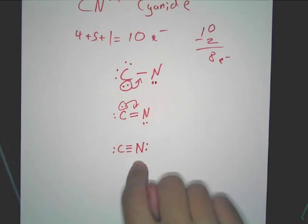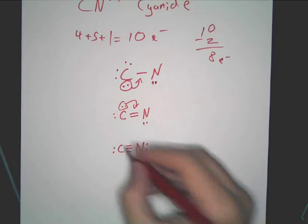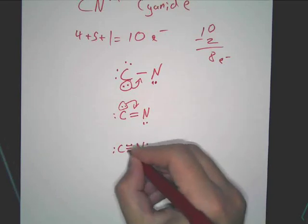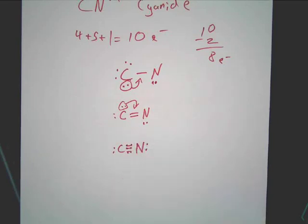But we'll talk about that when we talk about the VSEPR theory tomorrow. So, this is your structure. And think about it. Nitrogen has eight. Carbon has eight. Everything is happy. All because of this nice, fancy triple bond.